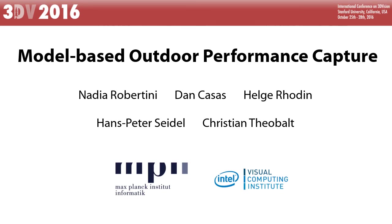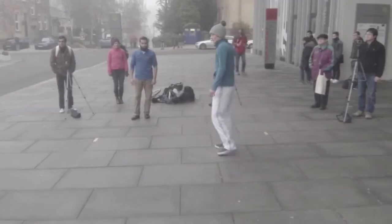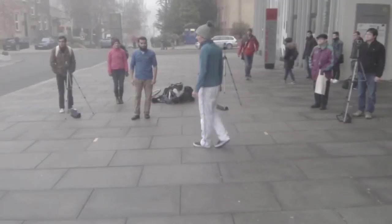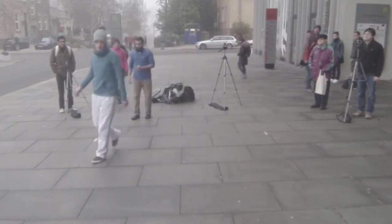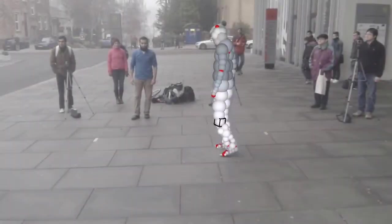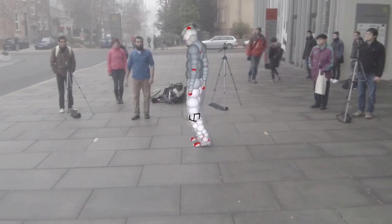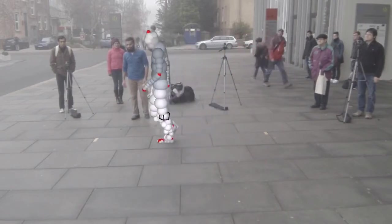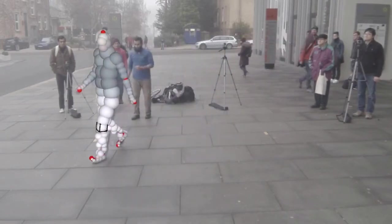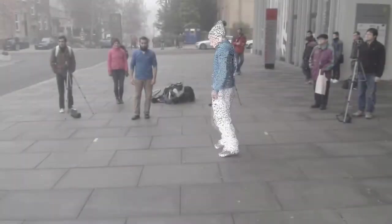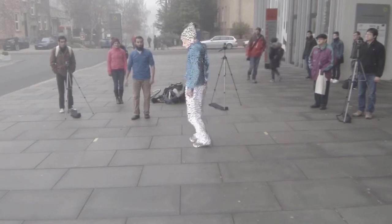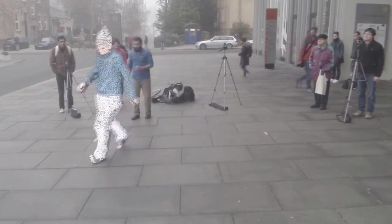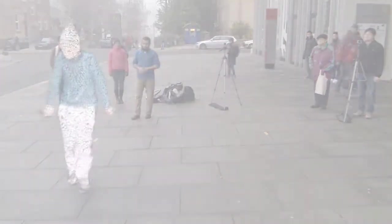We propose a new model-based method to accurately reconstruct human performances captured outdoors in a multi-camera setup. We first estimate the coarse skeleton pose using a volumetric implicit representation of the actor. We then jointly refine the non-rigid surface and body pose using a novel fine-scale implicit representation of the actor's surface.